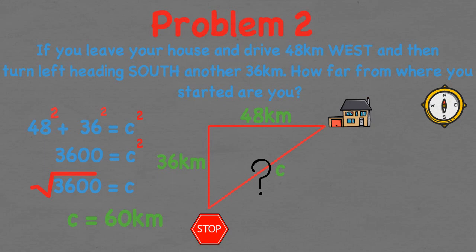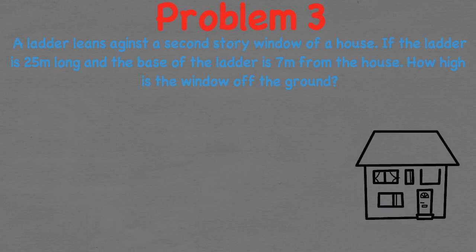Let's look at a problem where we know the hypotenuse and therefore can use this information to find the length of either the A or B side. Problem 3. A ladder leans against the second storey window of a house. If the ladder is 25 metres long and the base of the ladder is 7 metres from the house, how high is the second window?